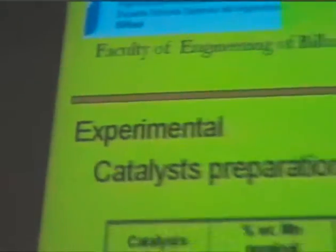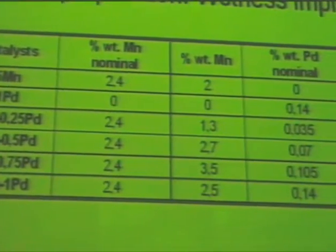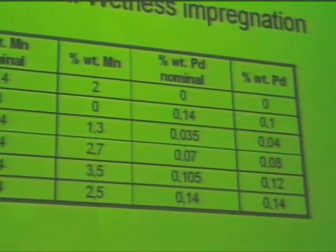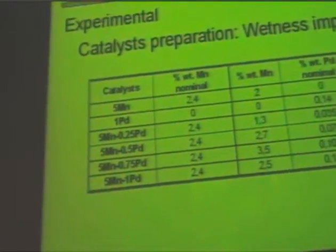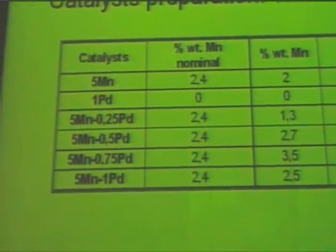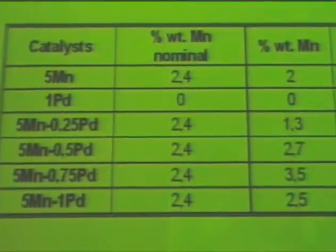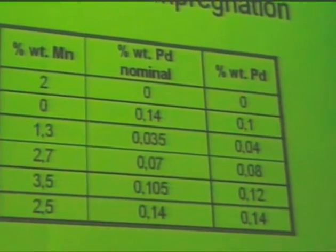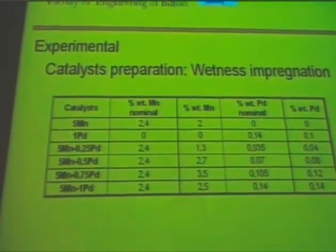Palladium catalysts are used for methane combustion because they are very active at quite low temperatures. But they have an important drawback: deactivation. They will not be able to maintain this high initial activity. But the presence of other metal oxides could improve the activity and stability. This is the aim of this work: by addition of manganese oxide, improved the activity and stability for methane catalytic combustion.